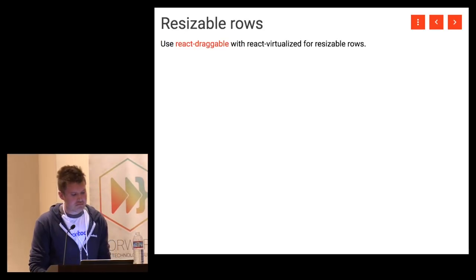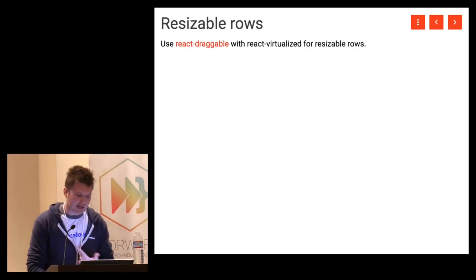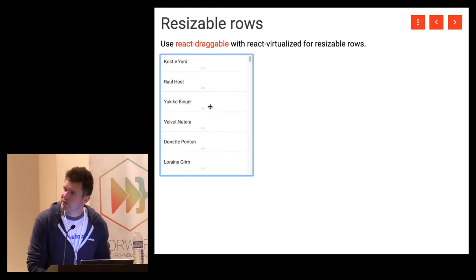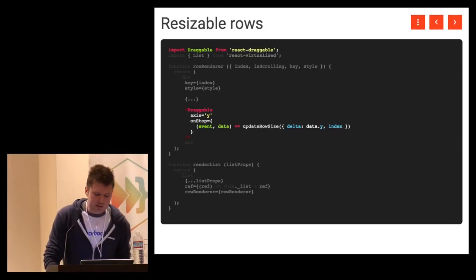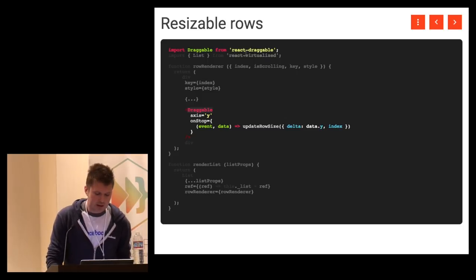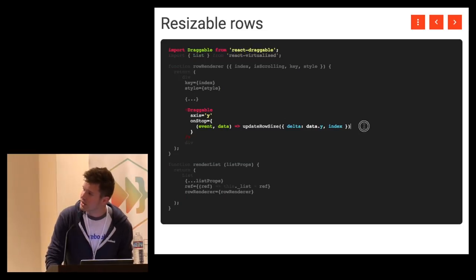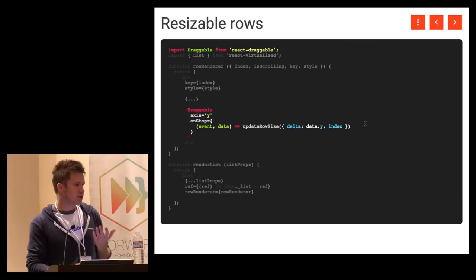There's also UX for resizing rows or columns. A library called React Draggable works well for that. You can drag-and-drop resize items in a list, and if you scroll away and come back they maintain their size. The code is minimal — you add a drag handle from React Draggable and listen for when an item has been resized, then adjust your local data structure that stores sizes.